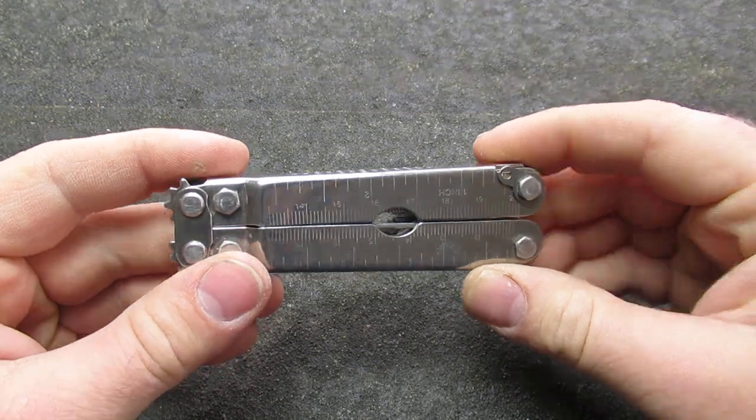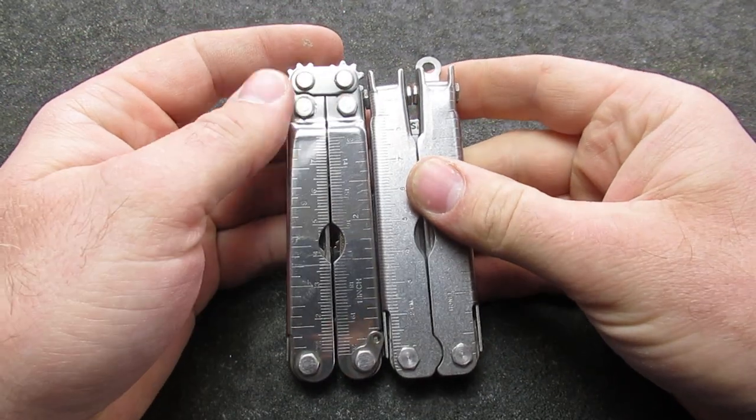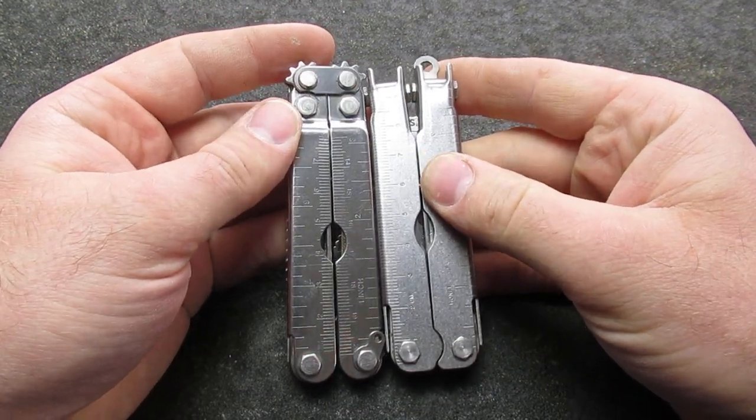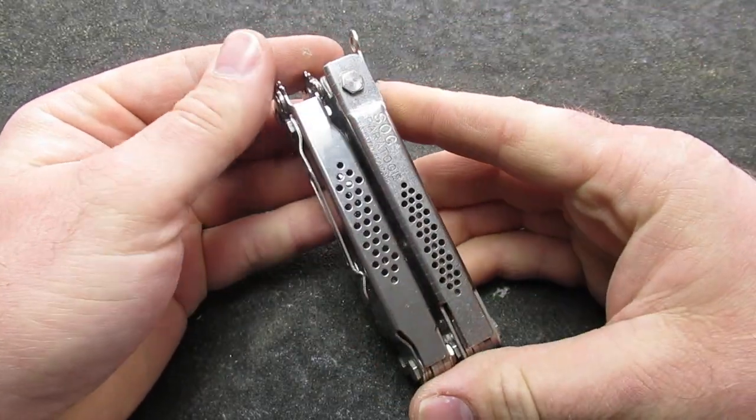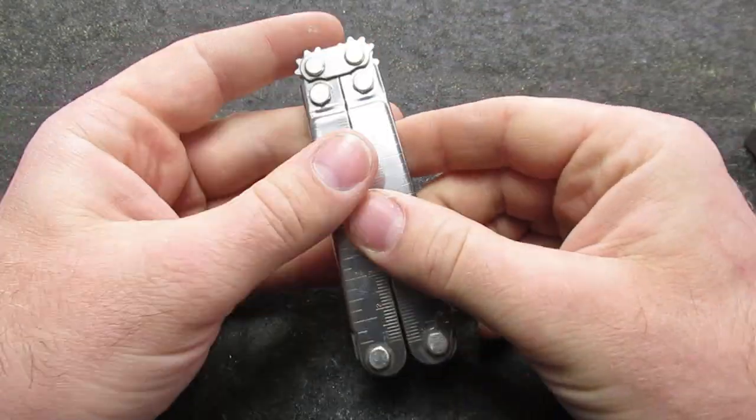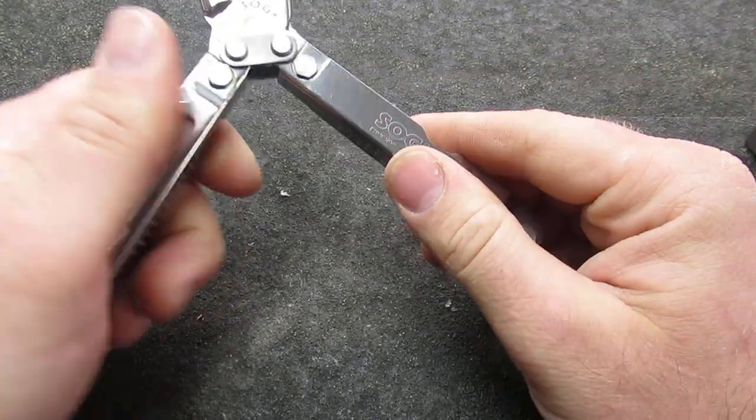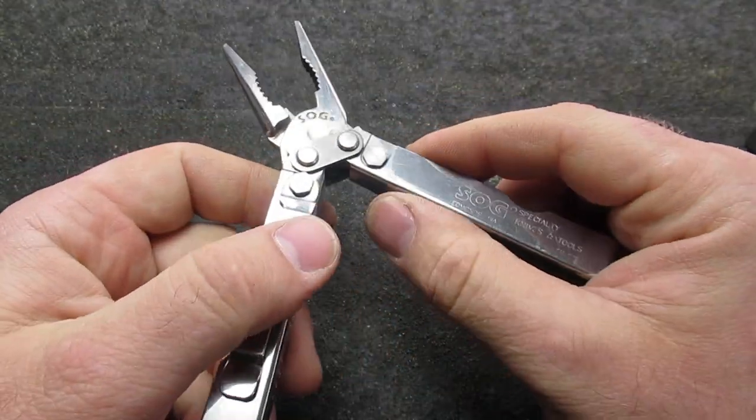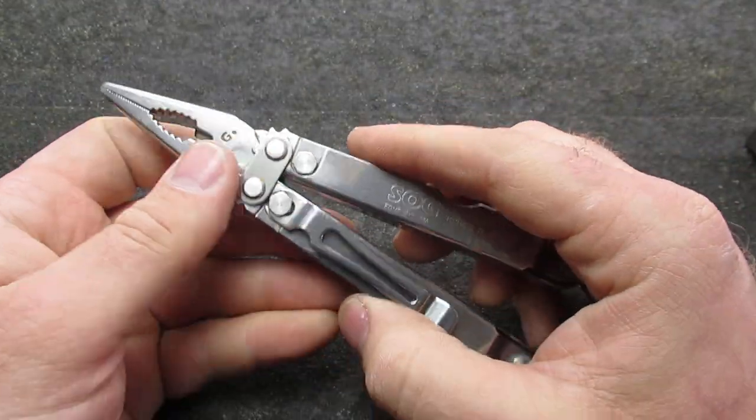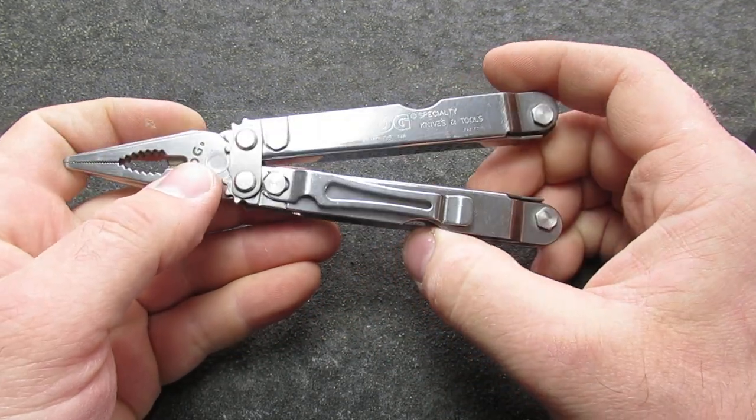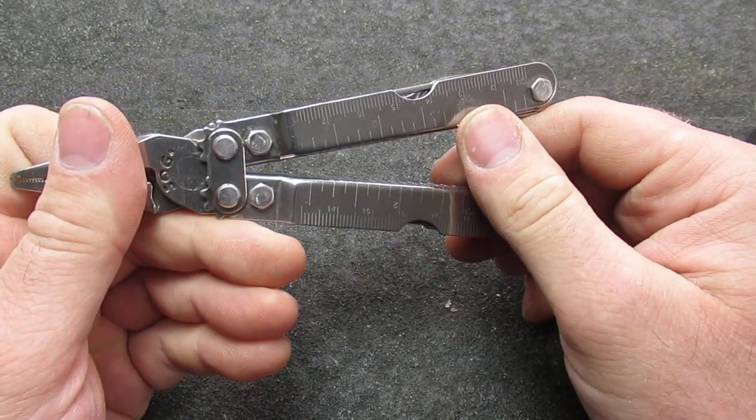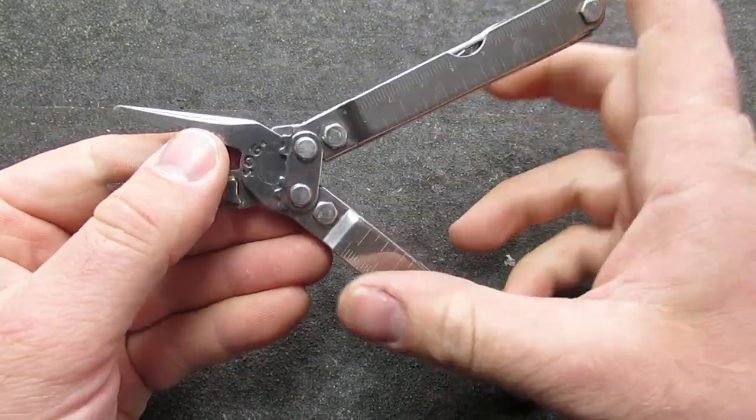It's very similar in size. For instance, this is the SOG Paratool that SOG came out with several years earlier, and this is the Pocket Power Plier. This comes in around 5.9 ounces - it's going to be a very light multi-tool with several functions.